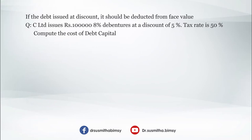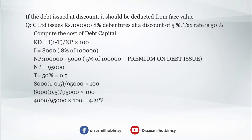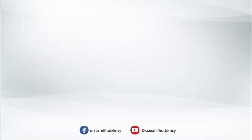Third problem: C Limited issues rupees 1 lakh 8% debentures at a discount of 5%; the tax rate is 50%. Compute the cost of debt capital. Using Kd = I × (1 − t) / NP × 100: I = 8,000; t = 0.5; NP = 1 lakh − 5% of 1 lakh = 1,00,000 − 5,000 = 95,000. So: 8,000 × 0.5 / 95,000 × 100 = 4,000 / 95,000 × 100 = 4.21%.